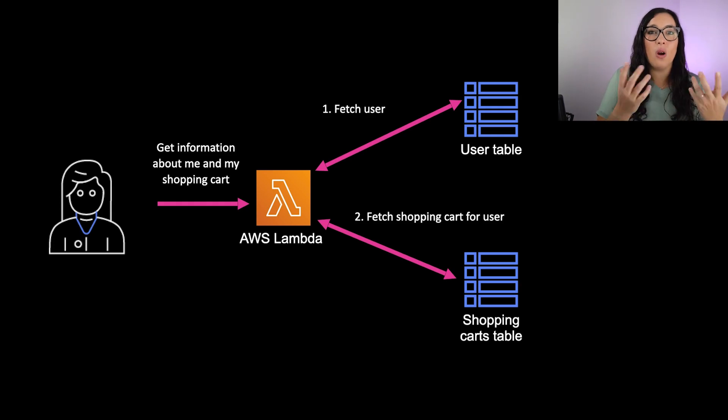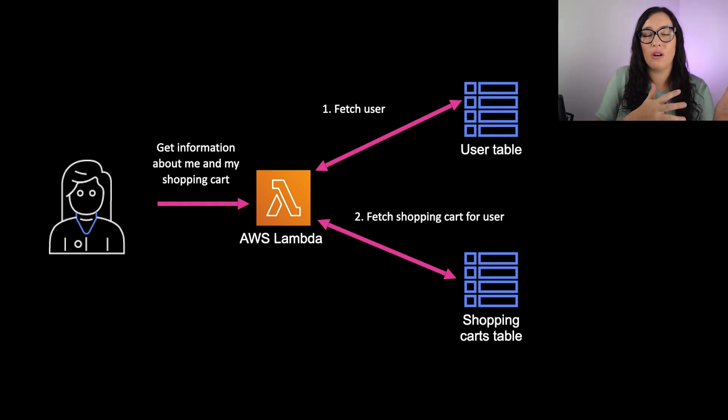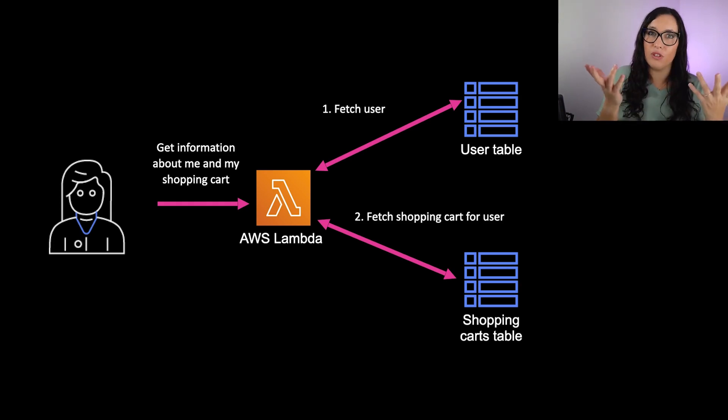You're doing two queries, whereas in relational databases you could join the two datasets in one request. So what is the solution to not having joins in Dynamo? The solution is to prepare your data for those queries — you need to prepare your data beforehand.